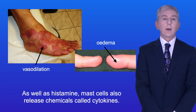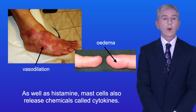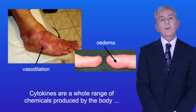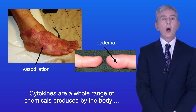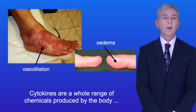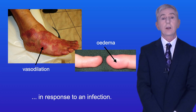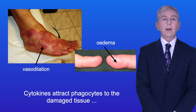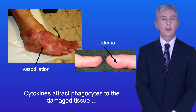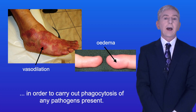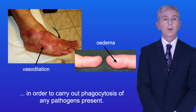As well as histamine, mast cells also release chemicals called cytokines. Cytokines are a whole range of chemicals produced by the body in response to an infection. Cytokines attract phagocytes to the damaged tissue in order to carry out phagocytosis of any pathogens present.